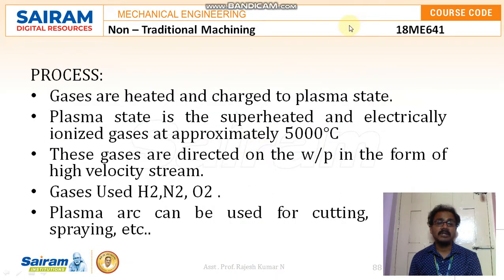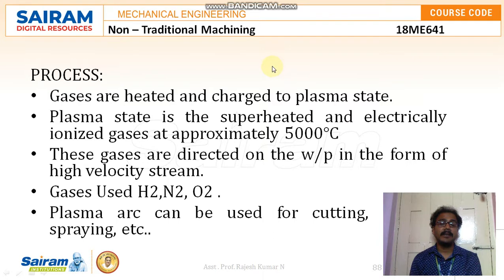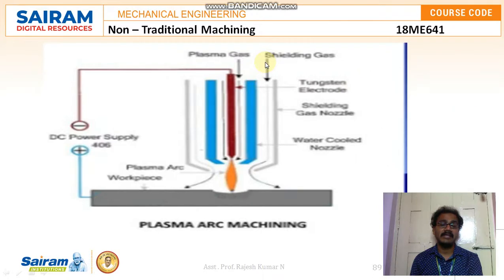Gases are heated and charged to the plasma state. Plasma state is the superheated and electrically ionized gas state at approximately 5,000 degree Celsius. These gases are directly applied on the workpiece in the form of a high velocity stream from the nozzle. The gases popularly used are hydrogen, nitrogen, and oxygen. Plasma arc can be used for cutting, welding, and spraying.